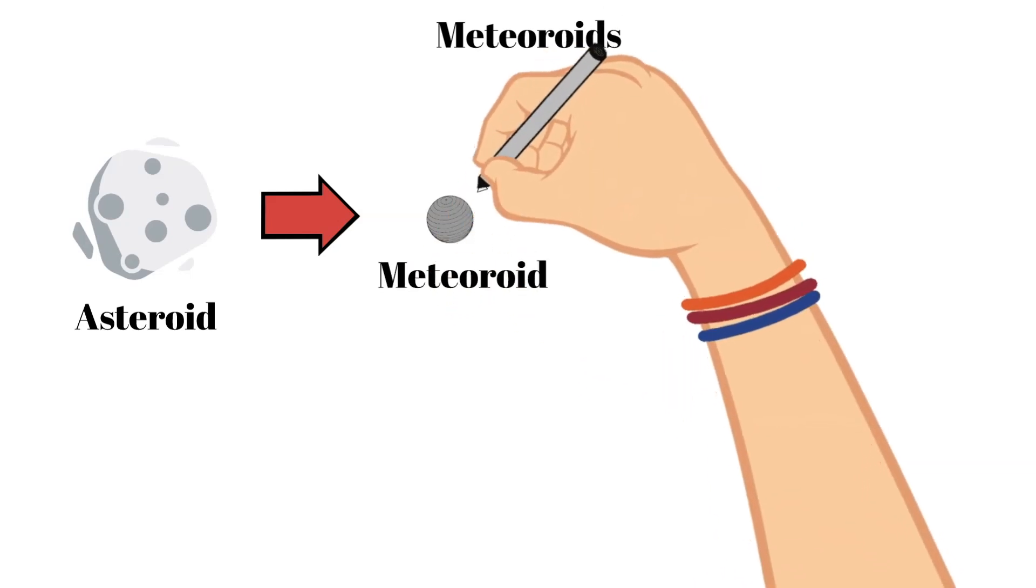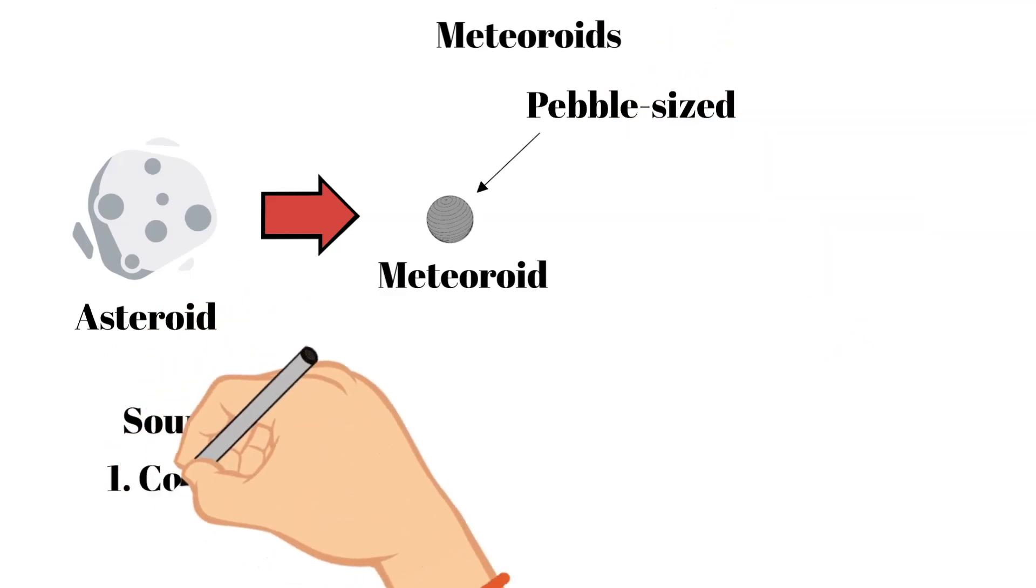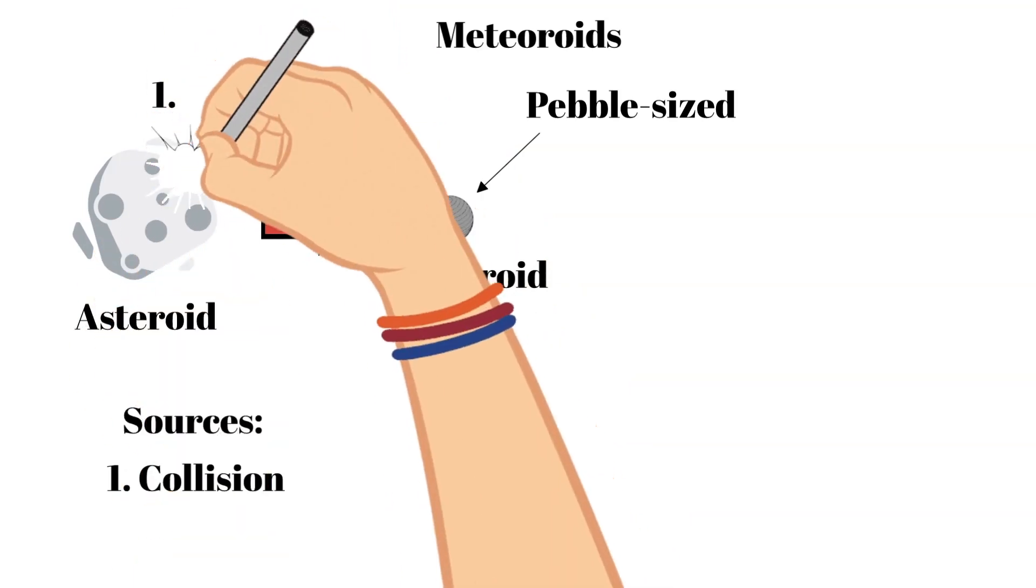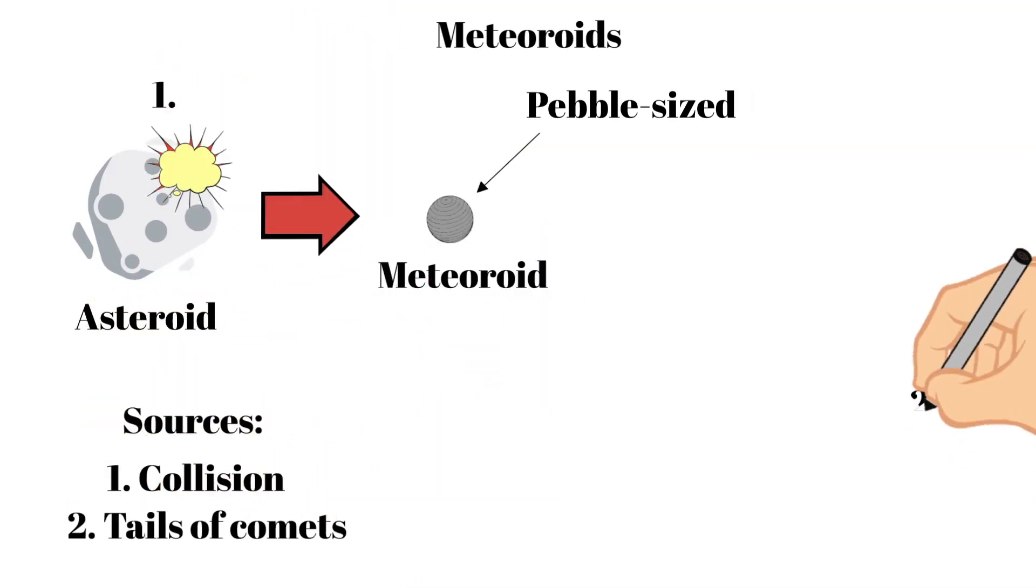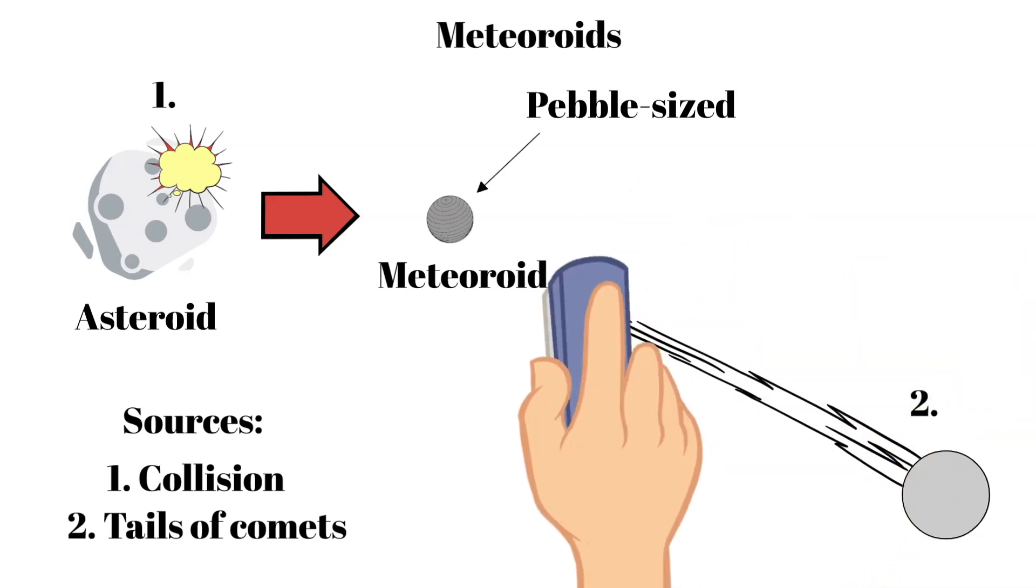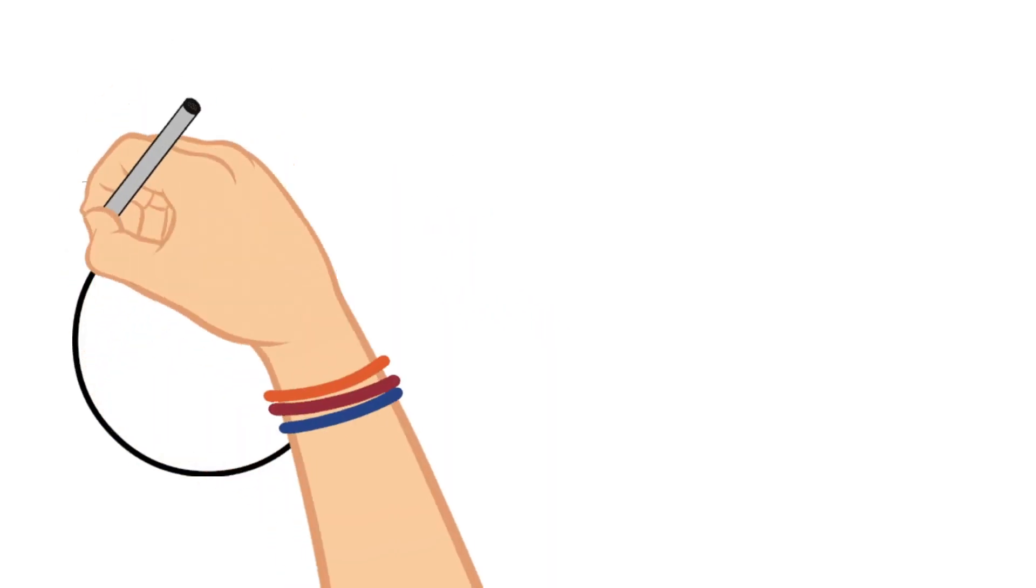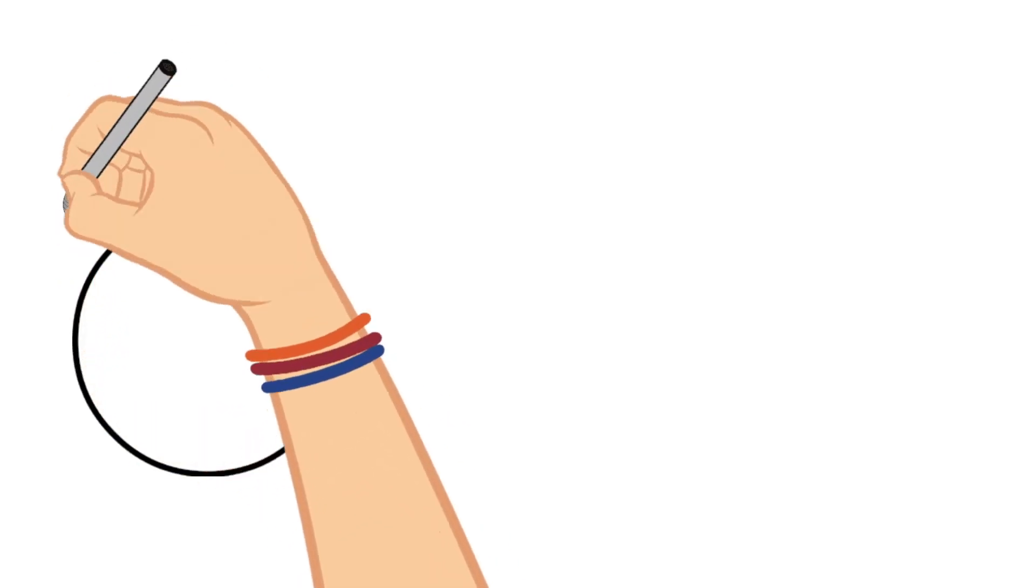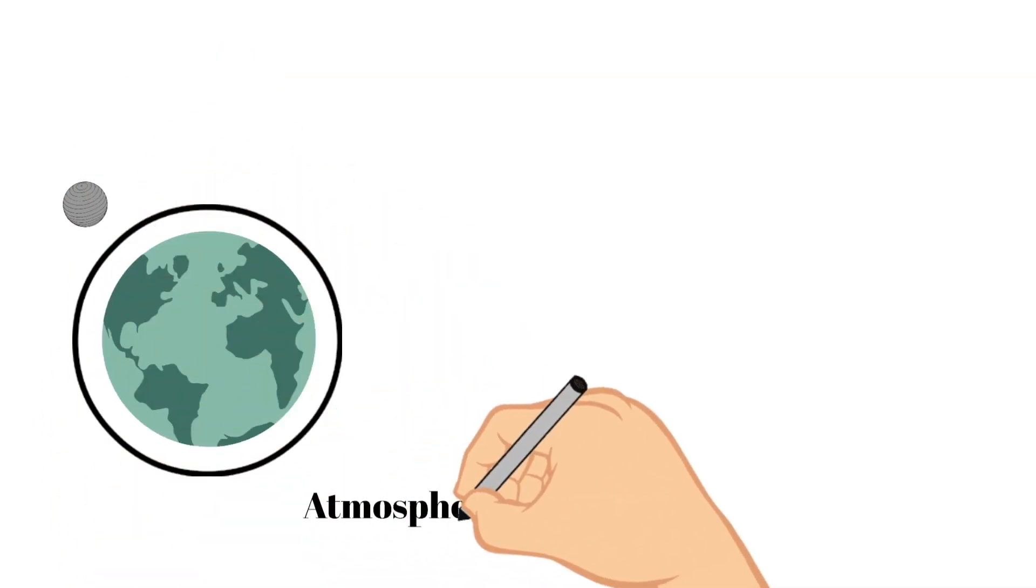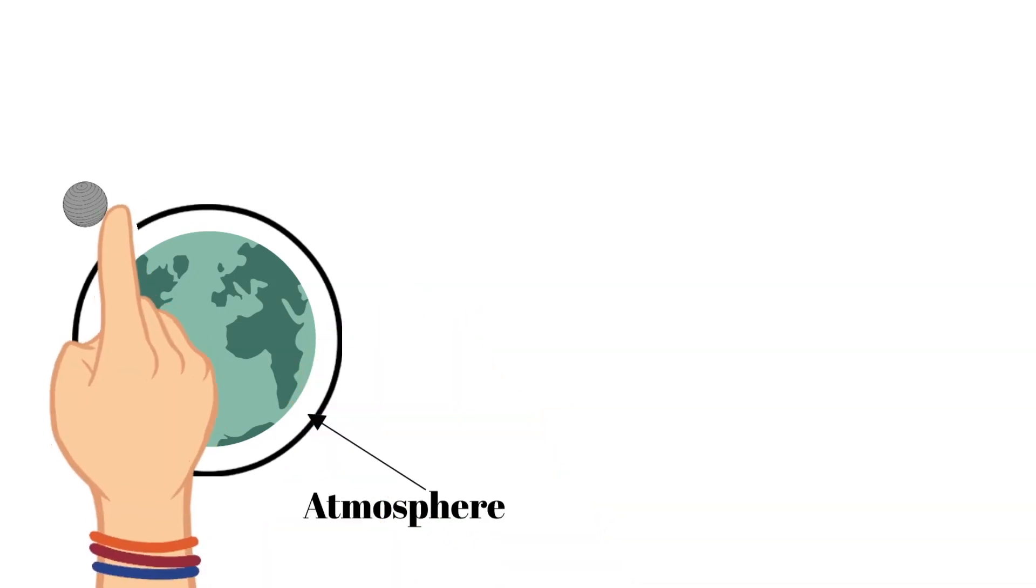Meteoroids are often caused by some sort of collision of an asteroid, or they compose the tails of comets. When a meteoroid gets close to Earth and enters its atmosphere, its name changes to a meteor.